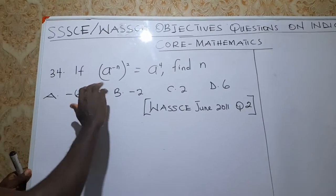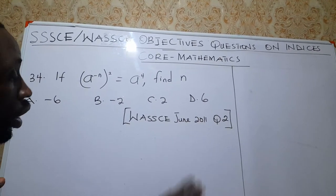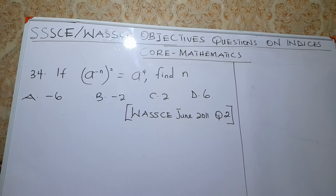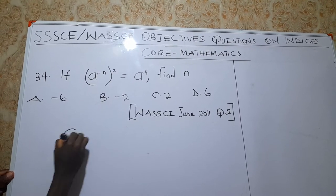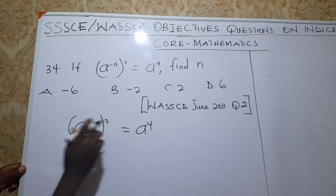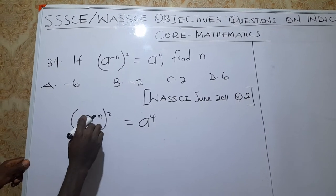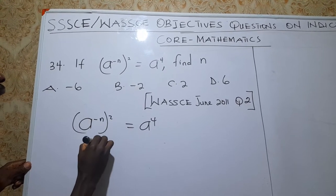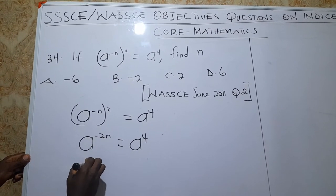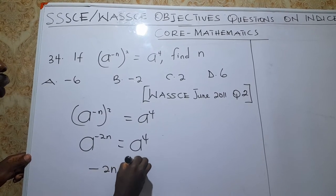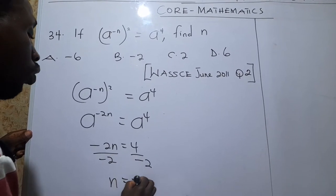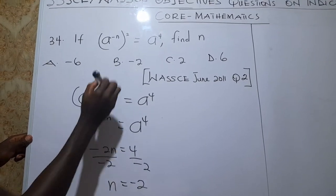This is objective question number 34, WASSCE June 2011, objective question number 2. It says if (a^(-n))^2 = a^4, find the value of n. Using the power of a power property, we get a^(-2n) = a^4. When the bases are the same, we equate the exponents: -2n = 4. Dividing both sides by -2, n = -2. The correct answer is B.